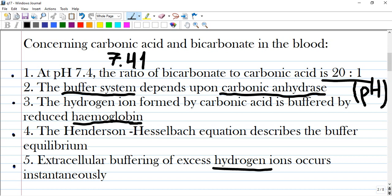The hydrogen ion formed by carbonic acid is buffered by reduced hemoglobin. Yes, hemoglobin is part of the buffer system.